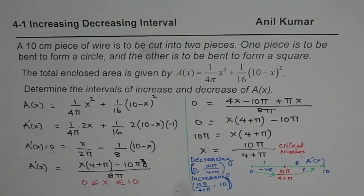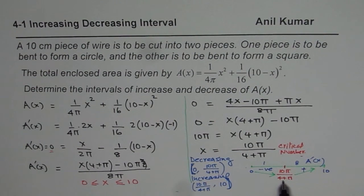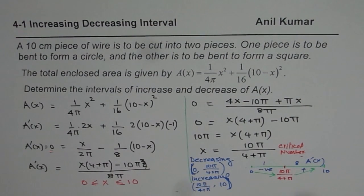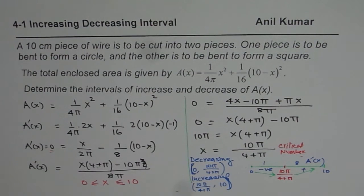We will learn later that this is also a technique to find the minimum value. The minimum area occurs when the length x converted to the circle is 10π/(4 + π). You can use a calculator to find the approximate decimal value. I hope that helps — thank you and all the best.